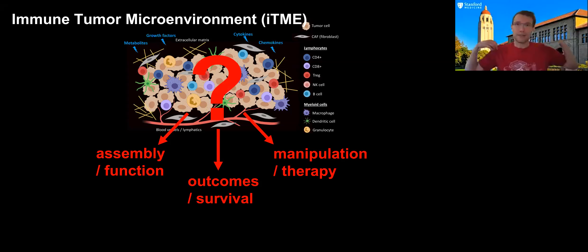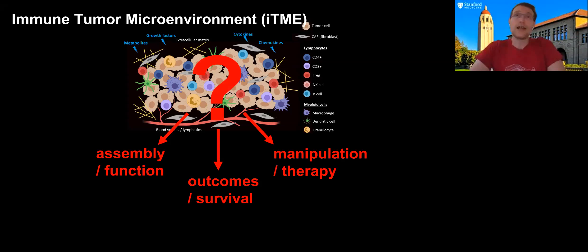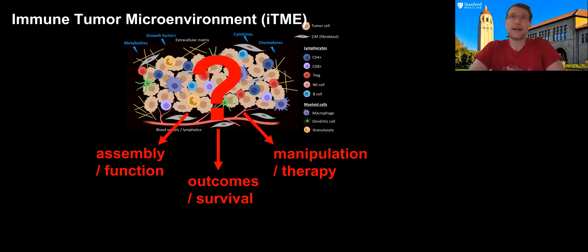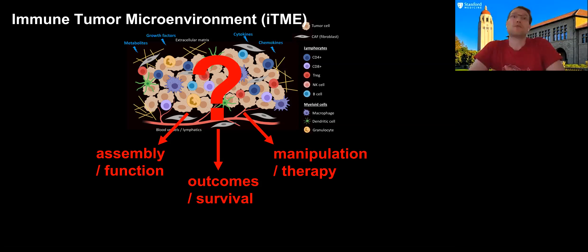Recent developments in single-cell RNA sequencing and mass cytometry (CyTOF) have helped identify cell types and frequencies in the tumor microenvironment, but these technologies have significant drawbacks. They require single-cell suspensions, meaning tissue must be ground down, and many cell populations — especially fibroblastic populations important in cancer — are lost during this process. Critically, we also lose the spatial composition, which is exactly what we are most interested in.